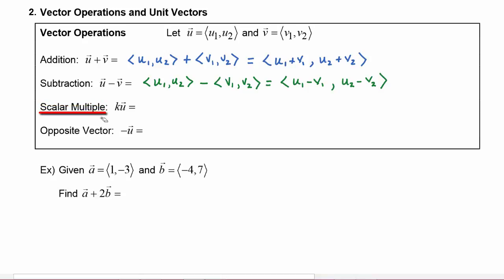To do a scalar multiple, remember a scalar has magnitude only — it is not a vector, so it does not have direction. In this example, k is the scalar. So we are taking k times vector u, which means we take the constant k times the vector (u1, u2). That scalar multiplies both the horizontal and vertical components, so this becomes the vector (k·u1, k·u2).